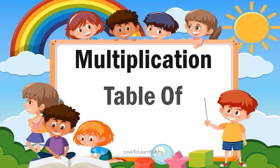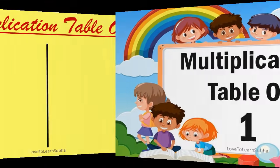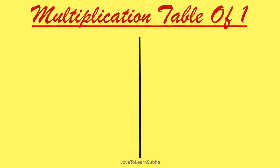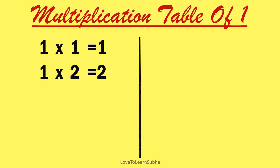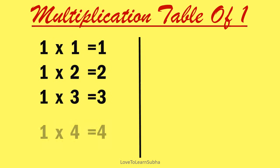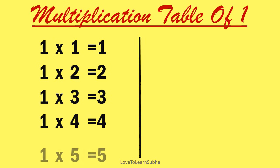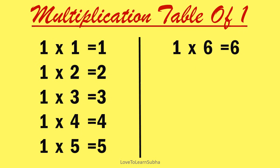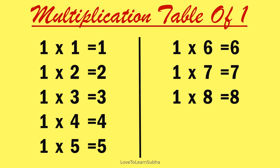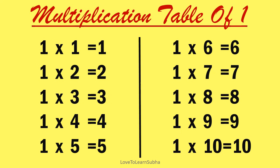Multiplication table of 1. 1 one is 1, 1 two is 2, 1 three is 3, 1 four is 4, 1 five is 5, 1 six is 6, 1 seven is 7, 1 eight is 8, 1 nine is 9, 1 ten is 10.